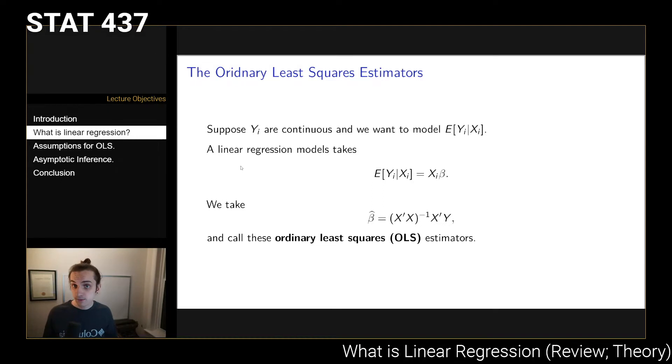If we take this model, we can use the ordinary least squares estimation procedure, which takes beta hat to be (X'X)^-1 X'Y, and this gives us the OLS estimators. This is generally speaking what we're doing here.